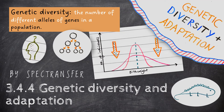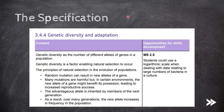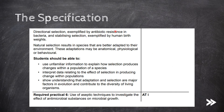Welcome to SPECTransfer and to topic 3.4.4, Genetic Diversity and Adaptation from the AQA A-Level Biology Specification. Let's start off with a look at the specification. First we need to define genetic diversity and then we'll move on to natural selection, the different types of selection including directional and stabilising selection, and how these are exemplified by antibiotic resistance and human birth weights. We should also know that natural selection results in species that are better adapted to their environment, and these adaptations may be anatomical, physiological or behavioural.